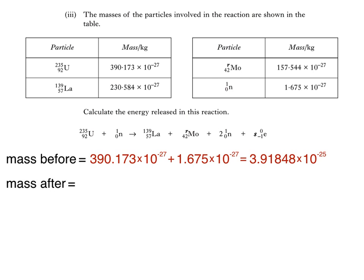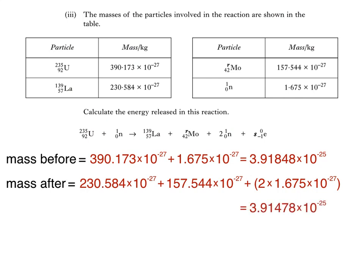The mass after the reaction is equal to the mass of the lanthanum nucleus plus the mass of the molybdenum nucleus plus the mass of two neutrons, giving us a total of 3.91478 times 10 to the negative 25 kilograms. It's important not to round these values since we're trying to find the difference between them, which is so small.